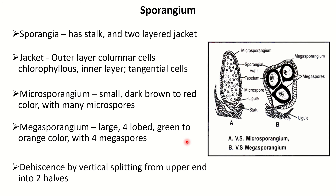The sporangium has a stalk and a double-layered jacket. The jacket has outer columnar chlorophyllous cells that can prepare their own food, and an inner layer with tangential cells. The microsporangium is small, dark brown to red in color, with many tiny microspores. The megasporangium, on the other hand, is large with four lobes, green to orange in color, and contains four megaspores. Dehiscence occurs by vertical splitting from the upper end into two halves.